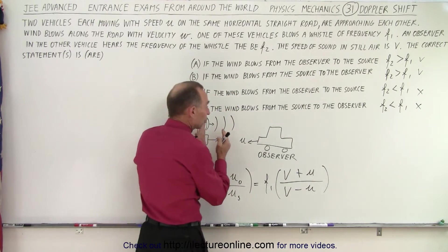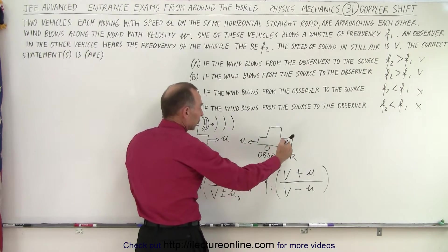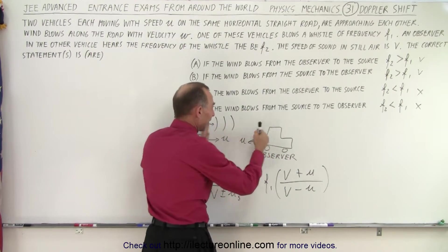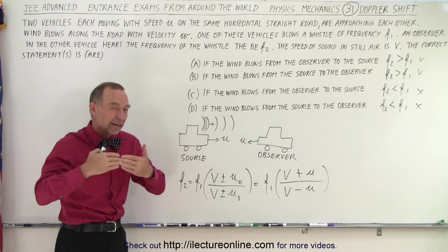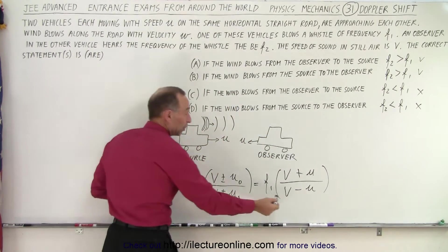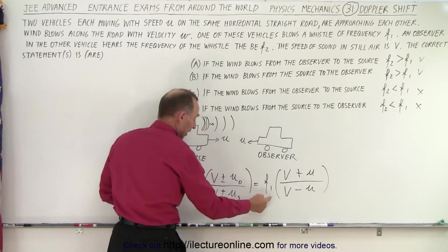If the waves are carried to the observer faster, then of course it kind of has two effects. First of all, the observer will see the waves coming faster because they're traveling faster. Essentially, it's almost like the speed of sound in air is increased, and the speed of sound in air being increased has no effect on the relation between F2 and F1.